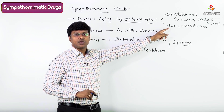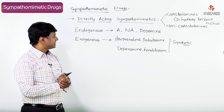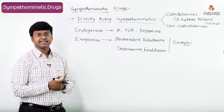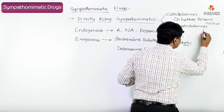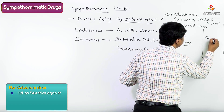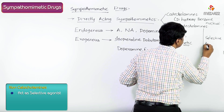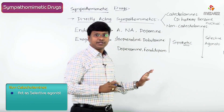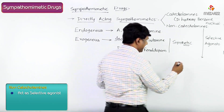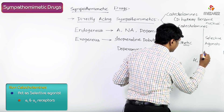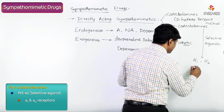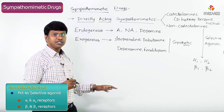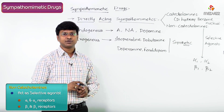The non-catecholamines act as selective agonists. They act on alpha-1 receptors, alpha-2 receptors, beta-1 receptors, and beta-2 receptors. That is about the action of the non-catecholamines.